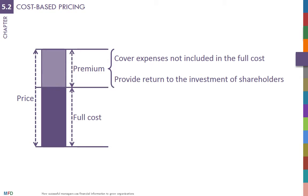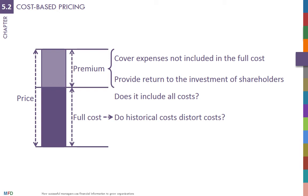This approach starts with the estimated cost. You need to be careful because cost systems may not include all costs. For example, some cost systems are limited to manufacturing costs and do not consider other costs, such as marketing or administration. Moreover, cost systems include cost information from past transactions, called historical costs.